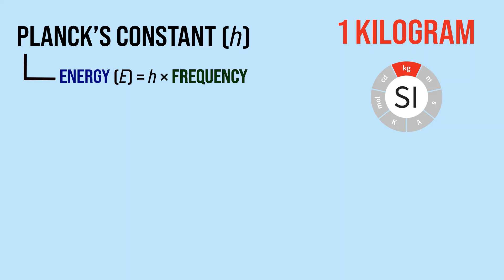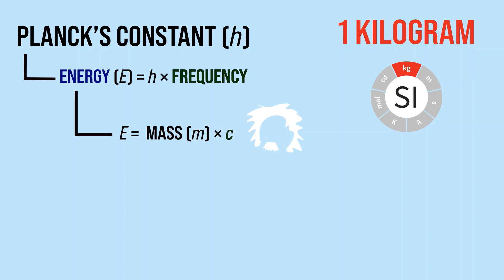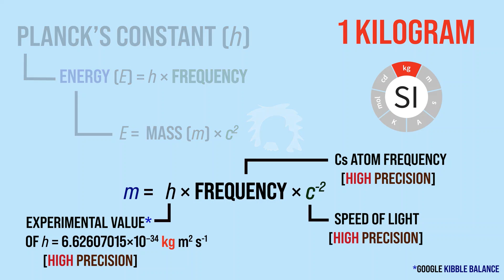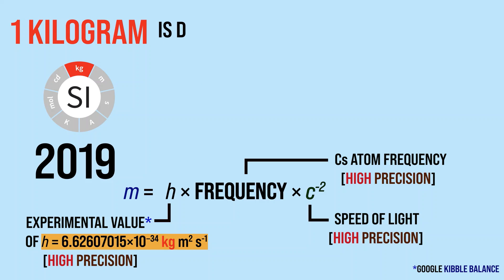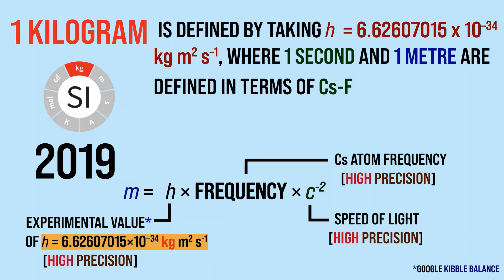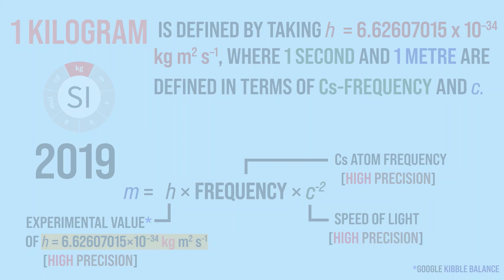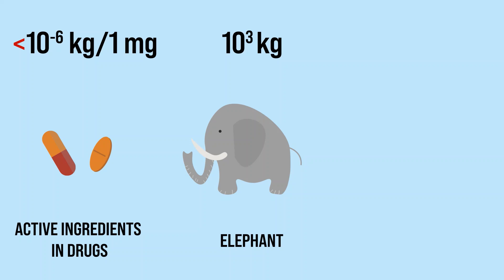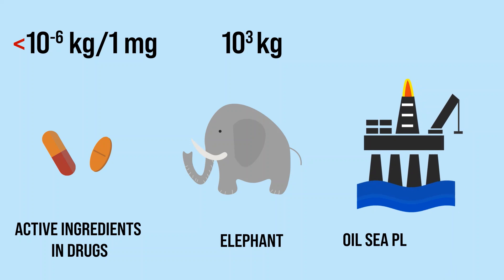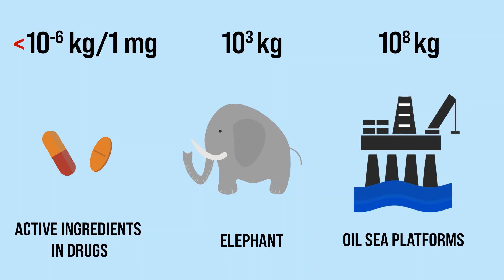Planck's constant is linked with energy, and energy is linked with mass. Scientists can accurately measure the value of Planck's constant and therefore redefine mass in terms of it, where the definition of one second and one meter is given in terms of cesium frequency and speed of light, respectively. Using modern techniques, we can measure active components of drugs that weigh less than a millionth of a kilogram, up to oil sea platforms that weigh over 200 million kilograms.